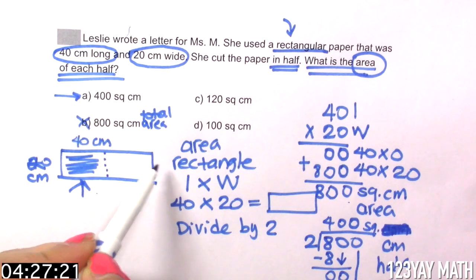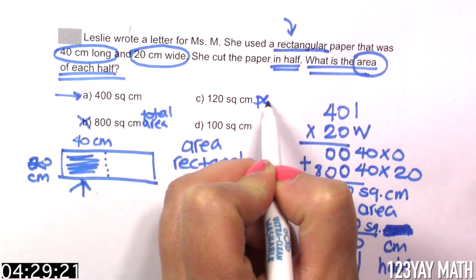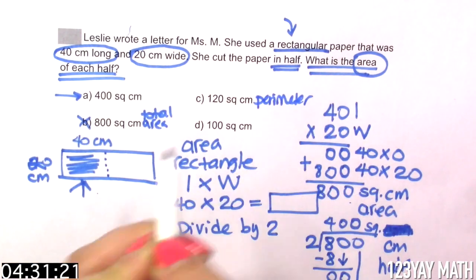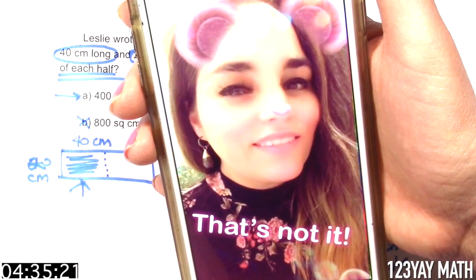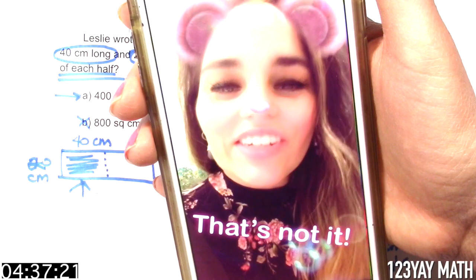100 plus 20. So this is the answer for perimeter. Are we looking for the perimeter? Are you thinking what I'm thinking? That's not the right answer. Keep going.